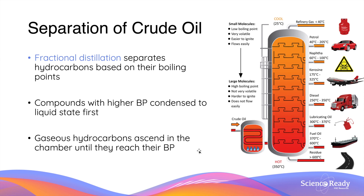It is important to know that crude oil is a mixture consisting of many different types of hydrocarbons. Fractional distillation is used to separate these hydrocarbons based on their boiling point. This is a very effective separation technique for crude oil because hydrocarbons have vastly different boiling points, mainly due to their differences in molecular weight and therefore dispersion forces.